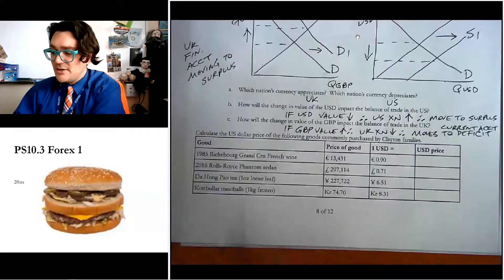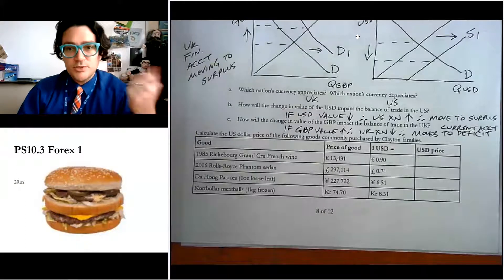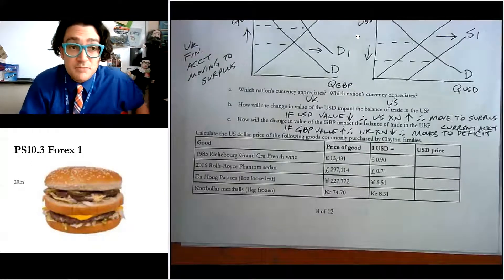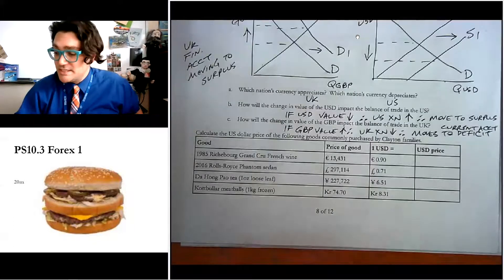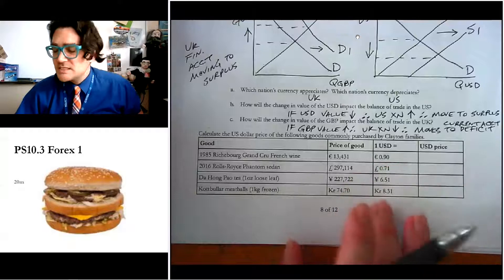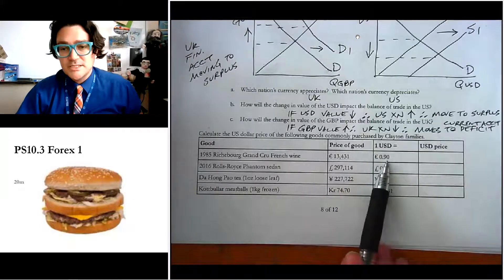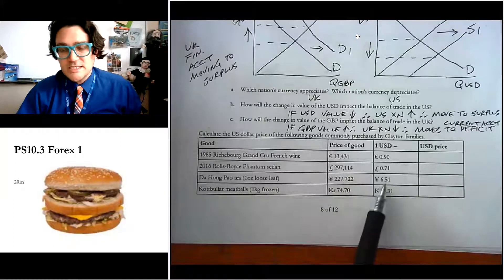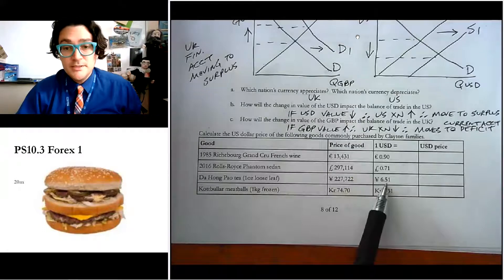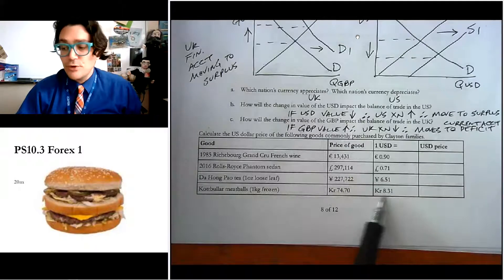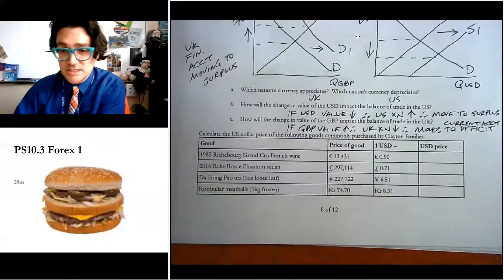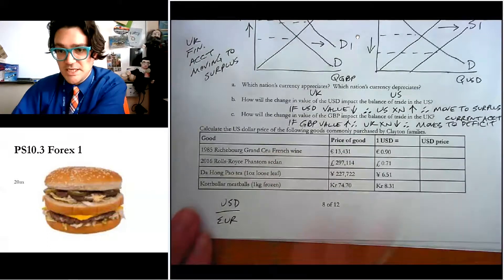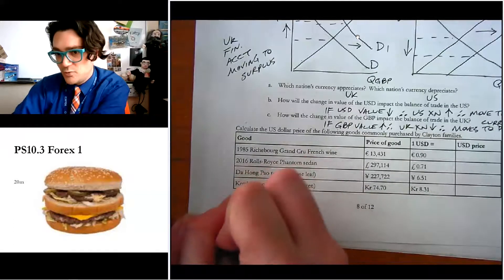Okay. Now, the last part on here is calculating the dollar price of goods and services that are pretty commonly purchased by Clayton families. This is actually a joke. These are just extremely expensive goods and meatballs from Ikea, which I'm pretty sure everybody loves meatballs from Ikea. So the trick to these, to be able to convert from like one price to another, and like reading these is to read that like $1 is buying 90 euro cents, or is buying 71 pence, which is a British, it's the British penny, or it's buying $1 is buying 6.51 Chinese yuan. And it's also buying 8.31 kroner, Swedish kroner. And so the way that we do this conversion is you have the US dollar to euro or whatever that other currency is. So in this case, it would be 1 to 0.90.